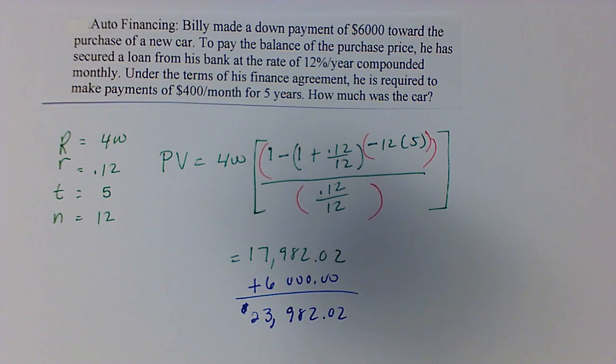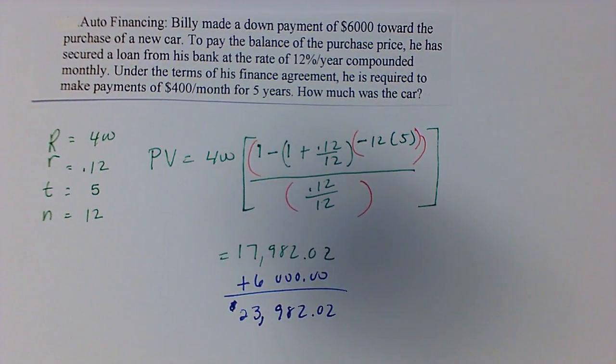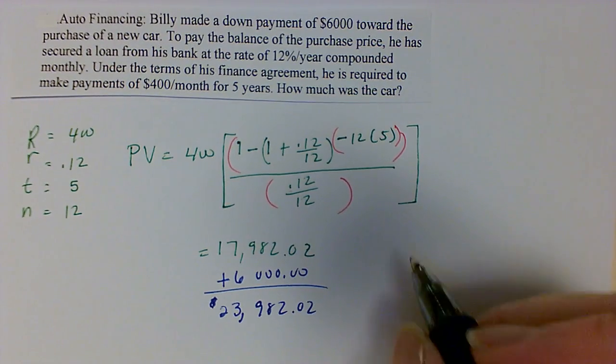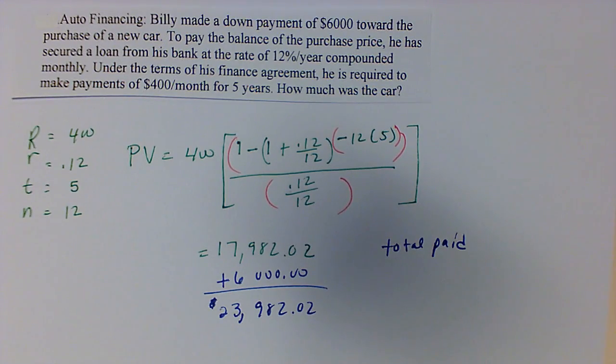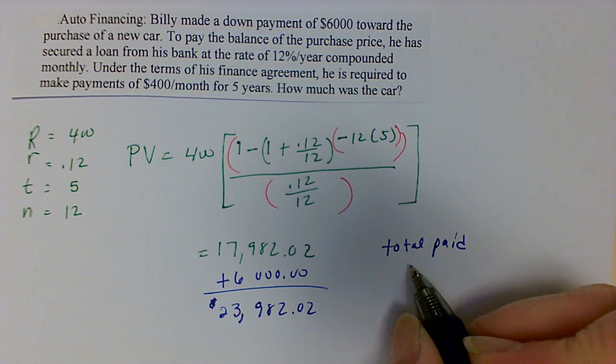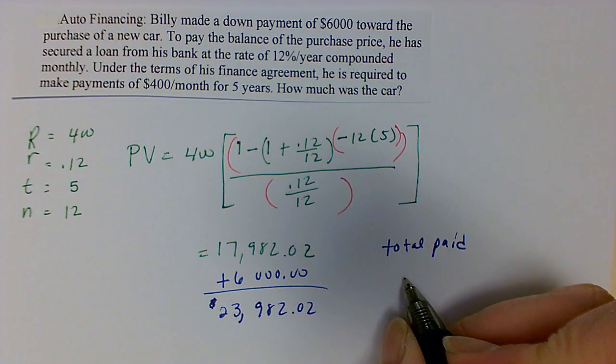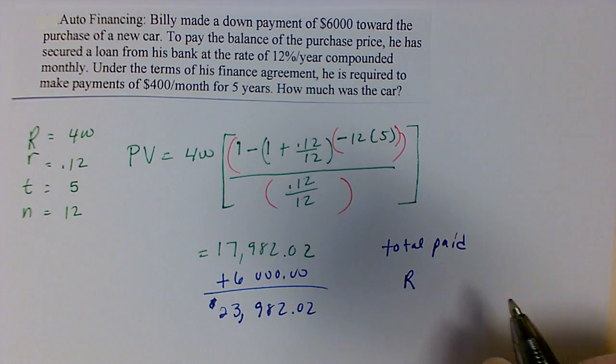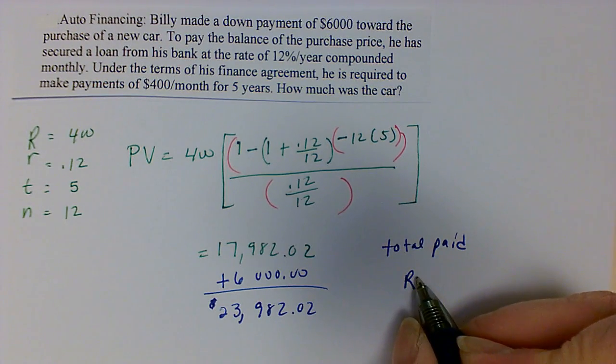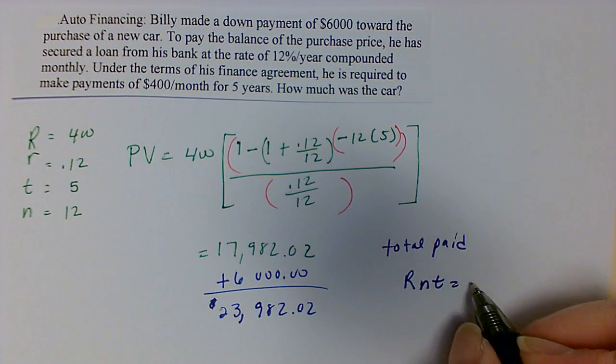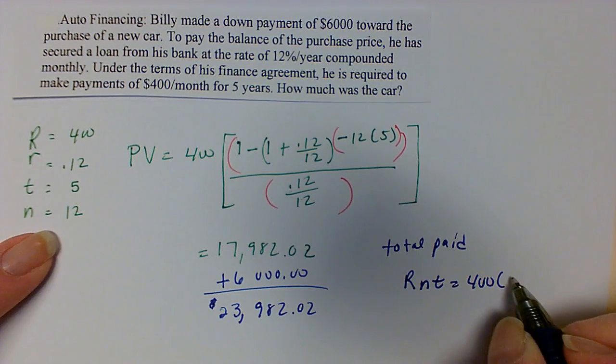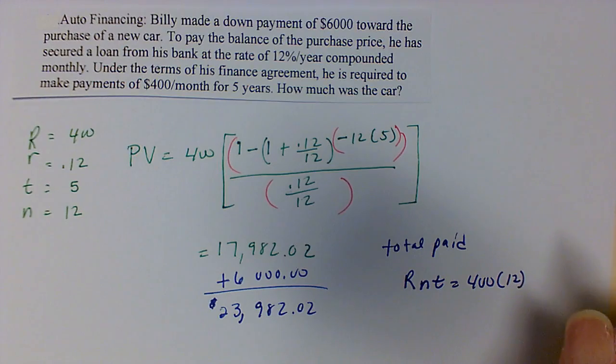Now if we want to discuss what you totally paid, that was how much the car cost. What did you total pay? If we want to look at the total paid for the car, including interest and everything, then we'll have R times n times t. So our payment is $400, n is 12 times a year, times 5 years. So our total payments would be $24,000.